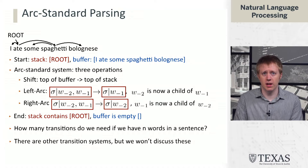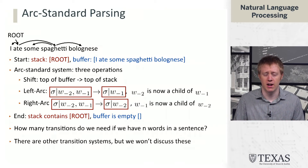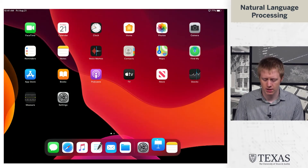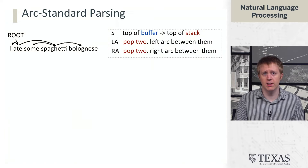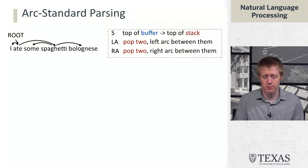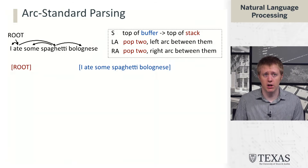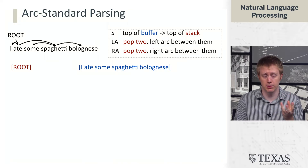There are other systems other than arc standard. They typically use operations that look similar but might directly pull things off the top of the buffer or be a little more flexible; we're not going to discuss them here. The basic ideas are the same in all cases. We want to use these operations to build up the tree — this is what we call an oracle derivation, how we construct the gold tree and what we hope to reproduce when we actually build a parser at test time.